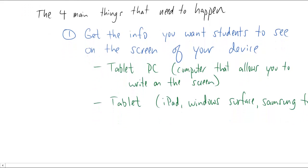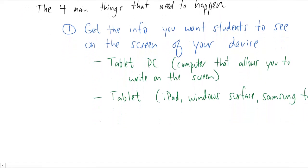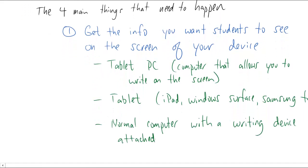And probably what is the least expensive and maybe most available option is just using any basic computer but attaching some kind of a writing device to it. I have one that's called a Wacom Bamboo tablet. This is the company name right here. They have a bunch of different tablet devices that connect to any personal computer and basically turn your computer into one of those tablets.